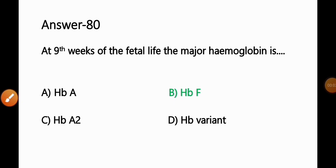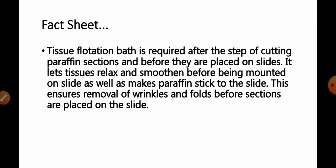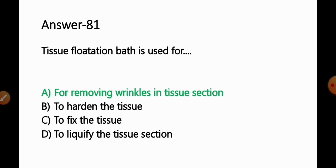Question No. 81: Tissue flotation bath is used for — Option A: Removing wrinkles in tissue sections; B: To harden the tissue; C: To fix the tissue; D: To liquefy the tissue sections. The tissue flotation bath is used after cutting paraffin sections and before placing them on the slide. It lets tissue relax and smoothen, removing wrinkles and folds before sections are mounted. So Option A is the correct answer.